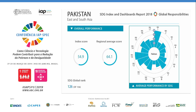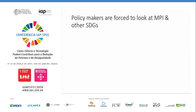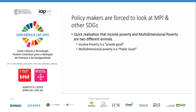Here was a case where a great thing happened in income poverty and everybody tried to shy away from it, not wanting to commit themselves and showcase what had happened. But the policymakers were then forced to look at multidimensional poverty and the other SDGs. There was a quick realization of the difference between income poverty and multidimensional poverty: income poverty is actually a private good — it is within the household — while all the other indicators are actually public goods.